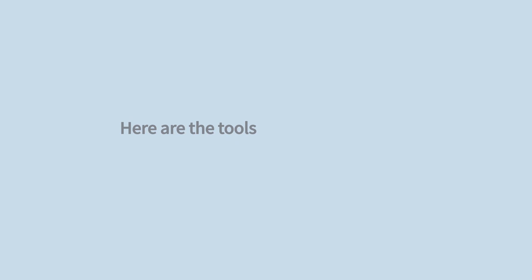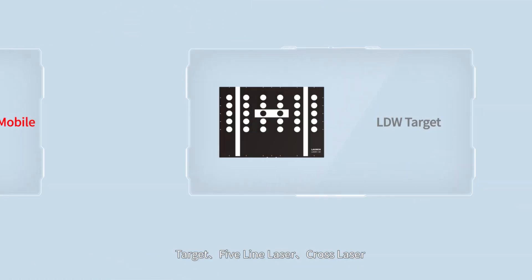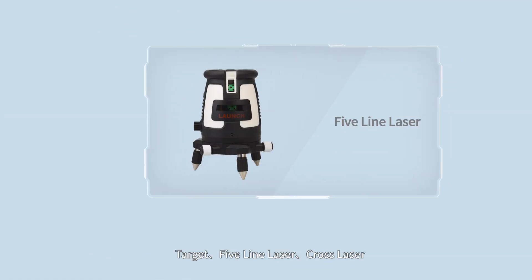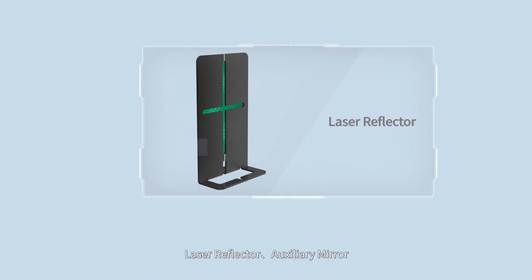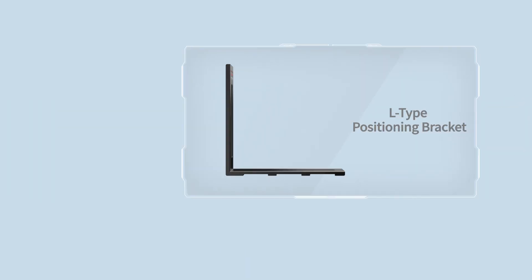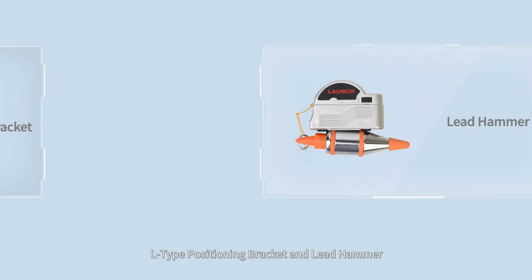Here are the tools we are going to use and all of them can be found in ADAS Mobile package. X431 ADAS Mobile, Target, 5-Line Laser, Cross Laser, Laser Reflector, Auxiliary Mirror, L-Type Positioning Bracket and Lead Hammer.